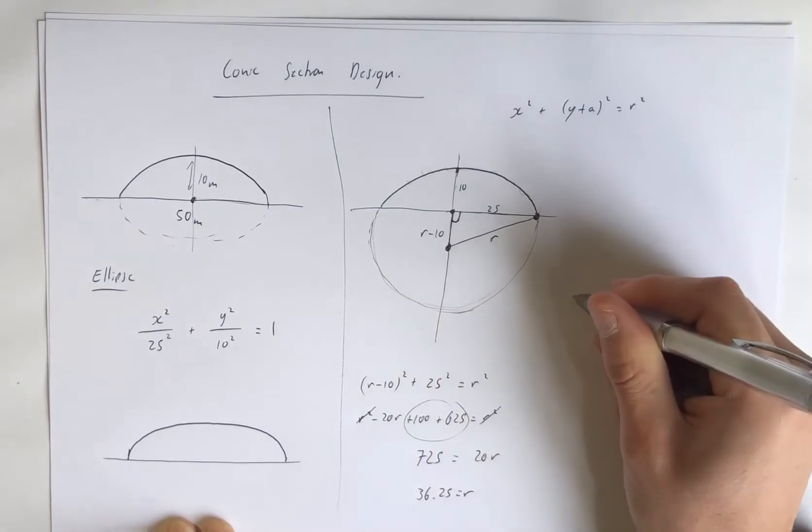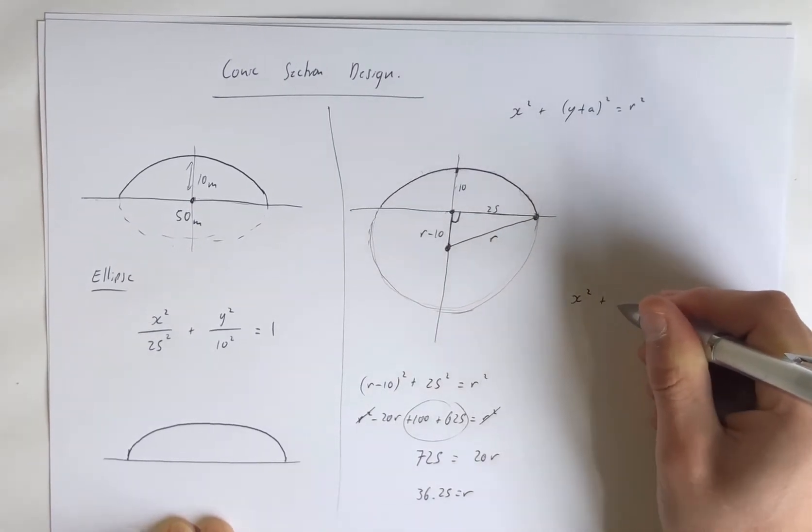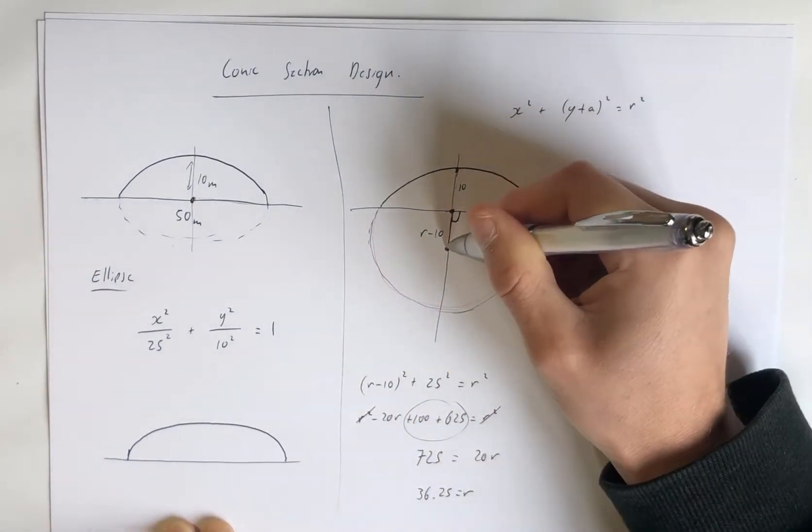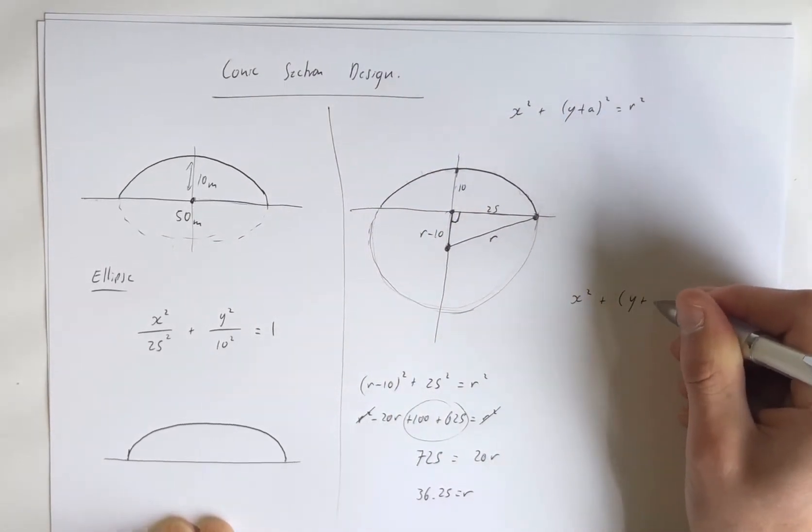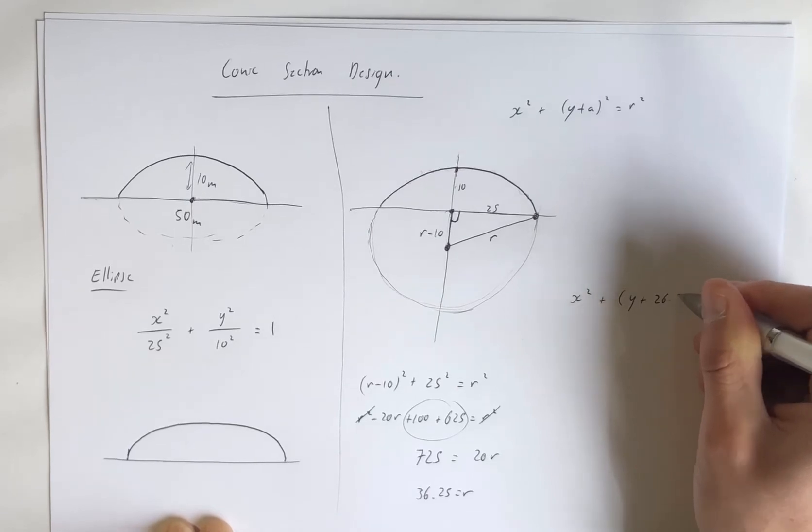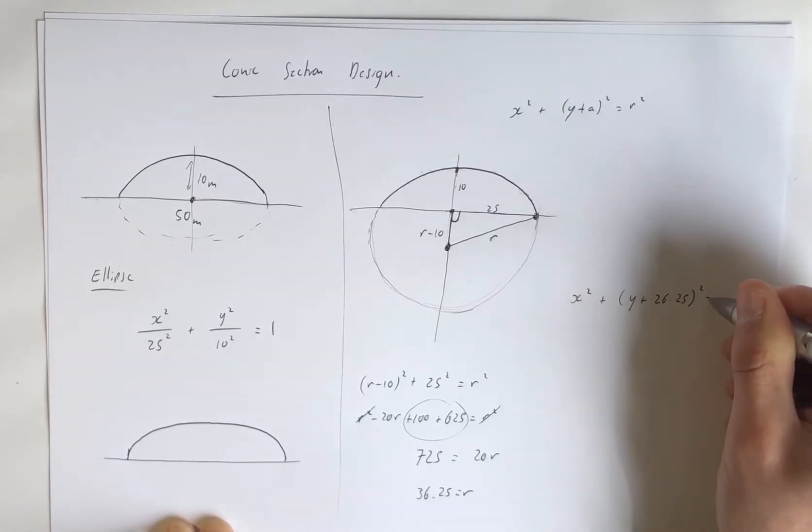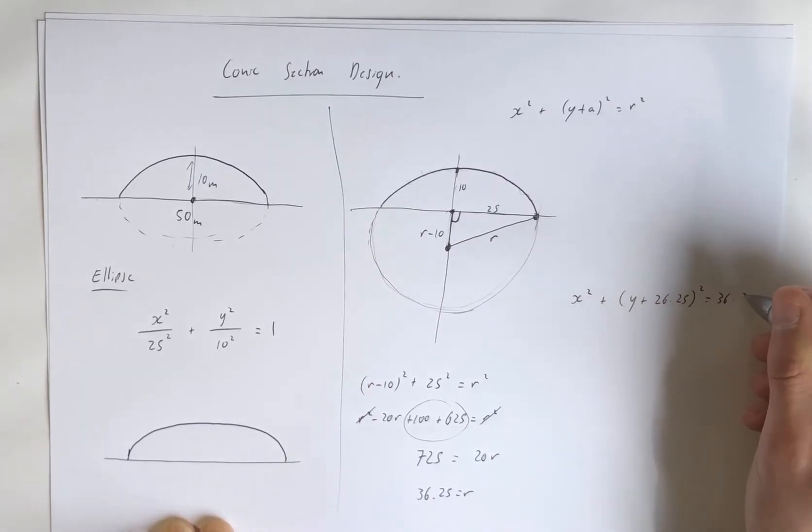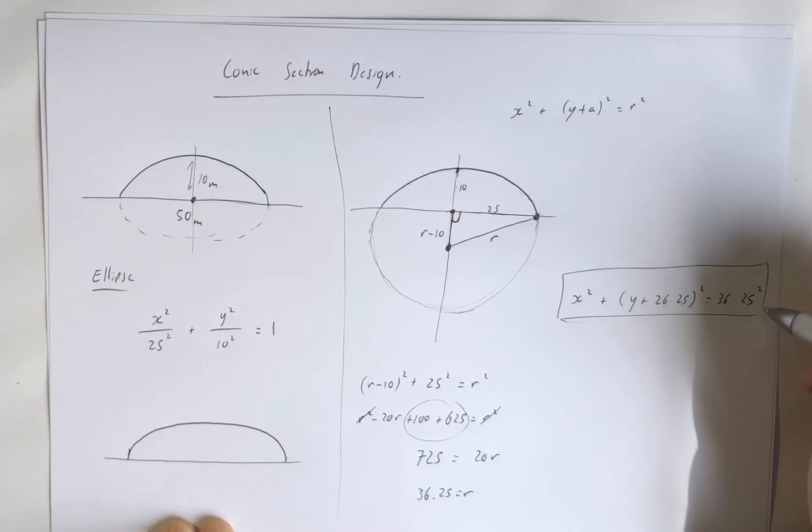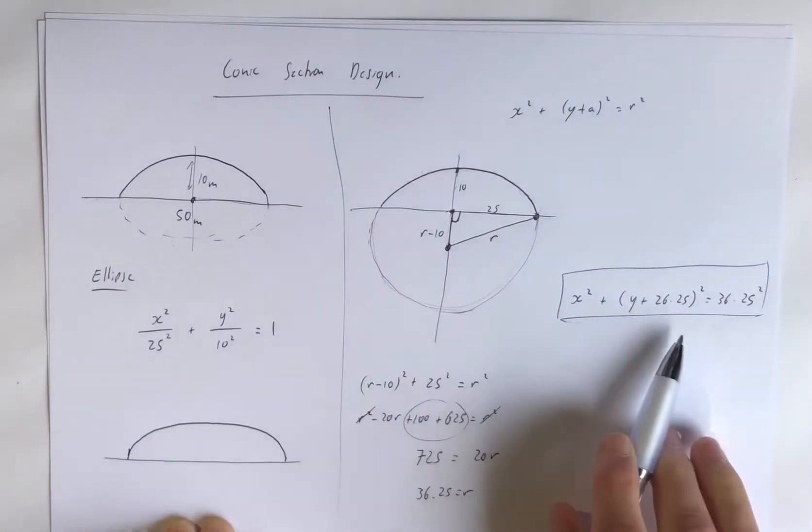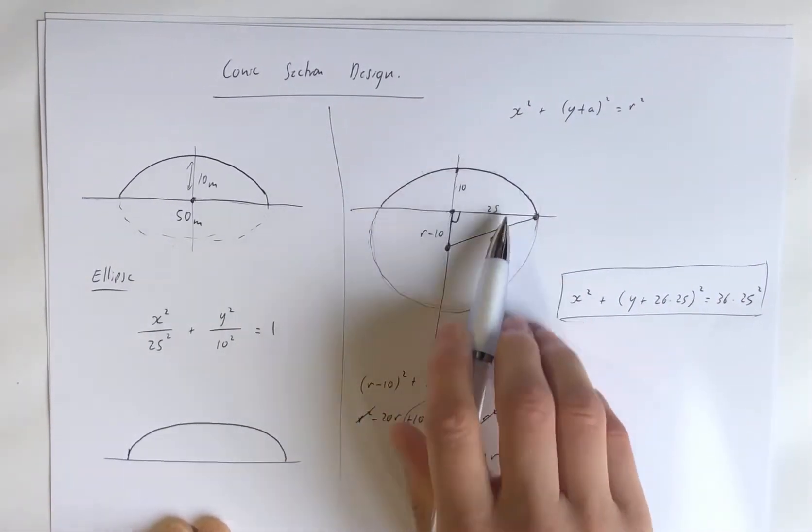And so our circle is X squared plus A is our vertical movement down, so R minus 10, Y plus 26.25 squared equals R squared. And there we have it. That is the equation of our roof design using a circular model.